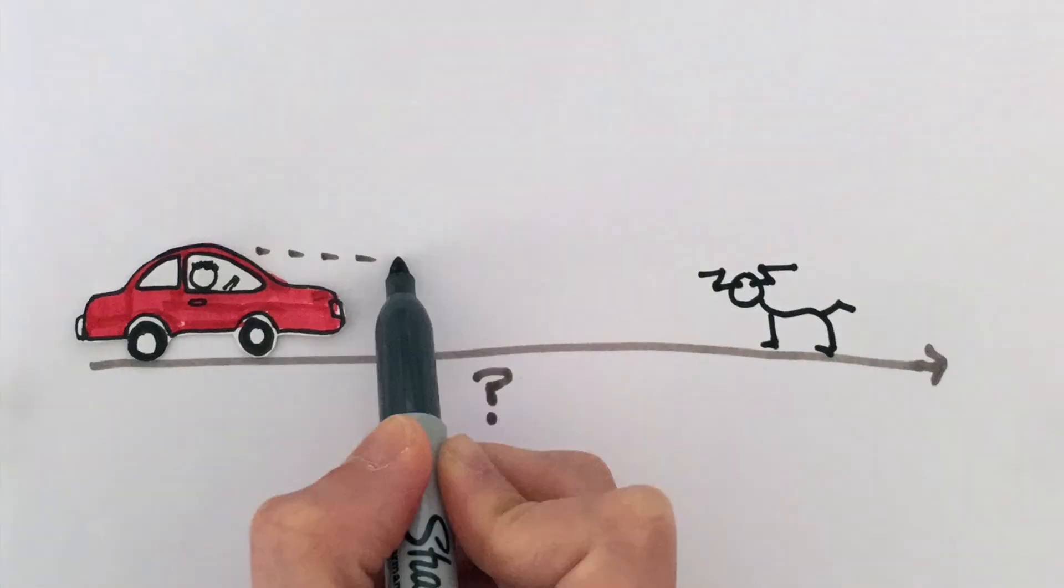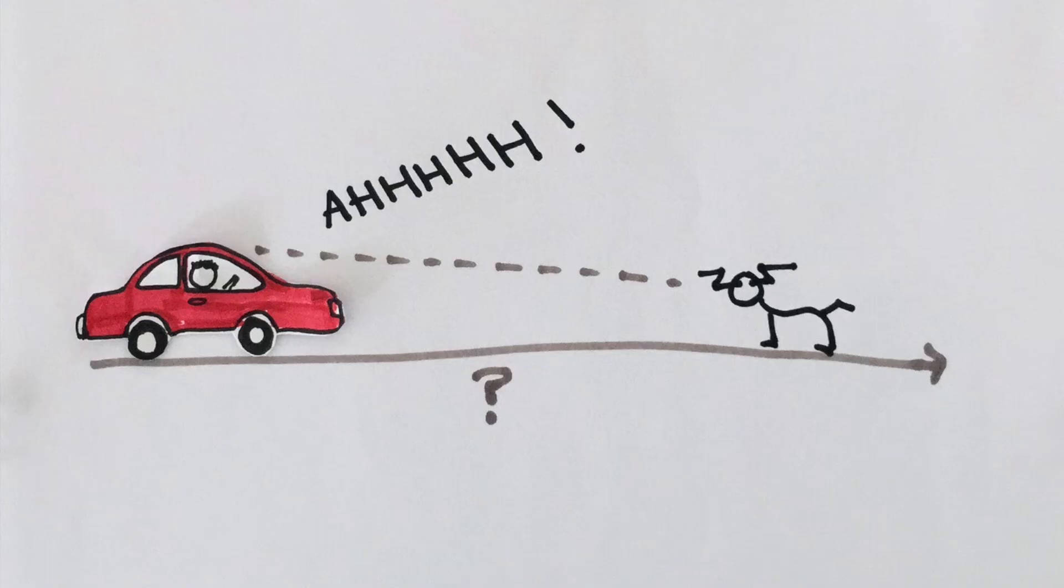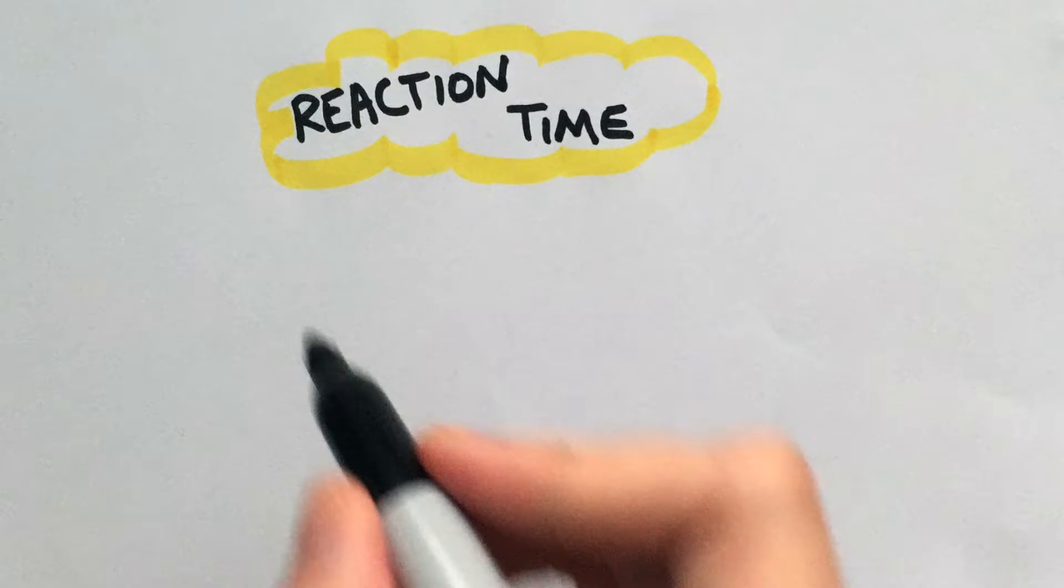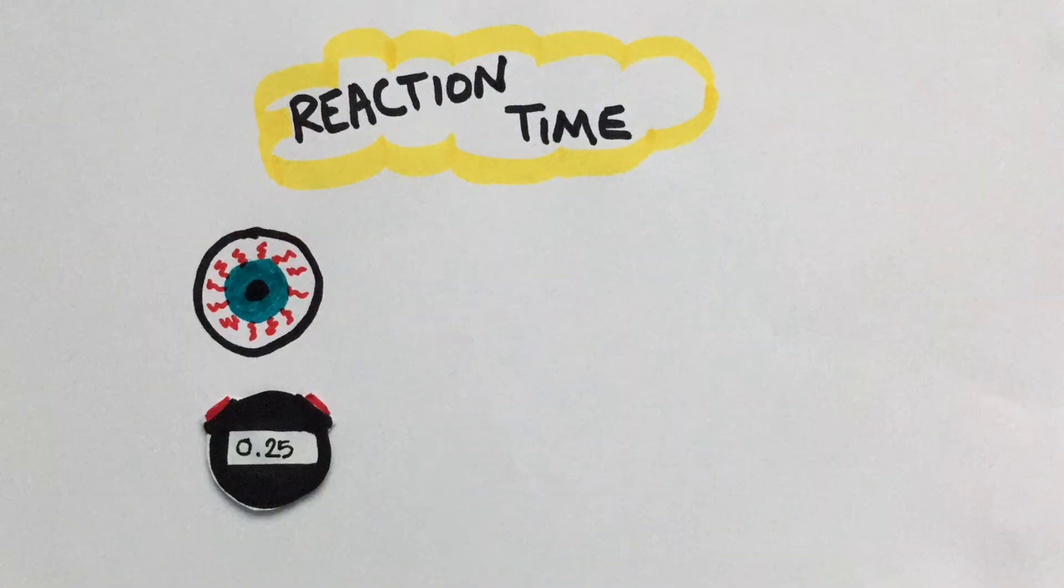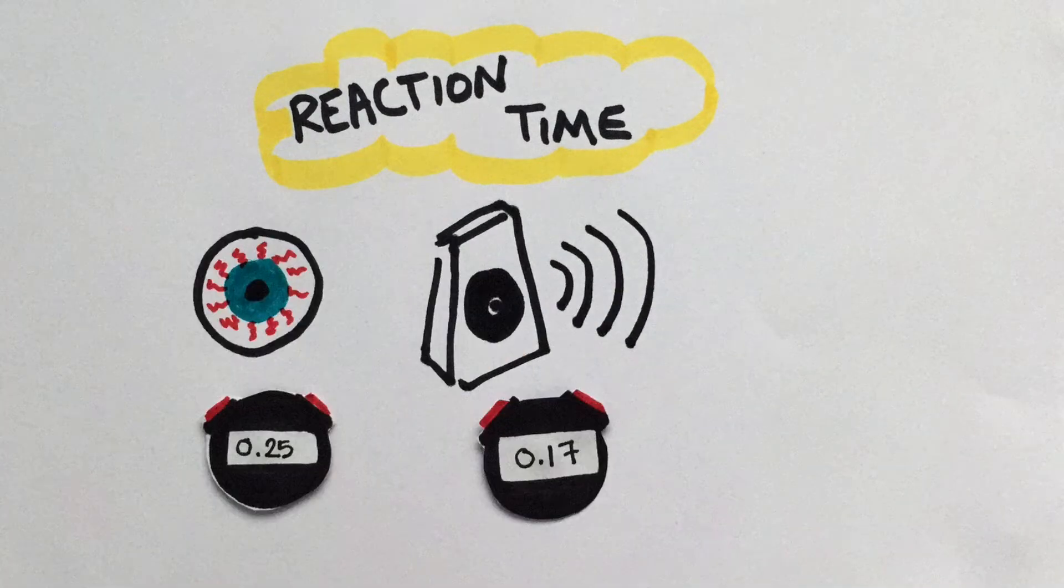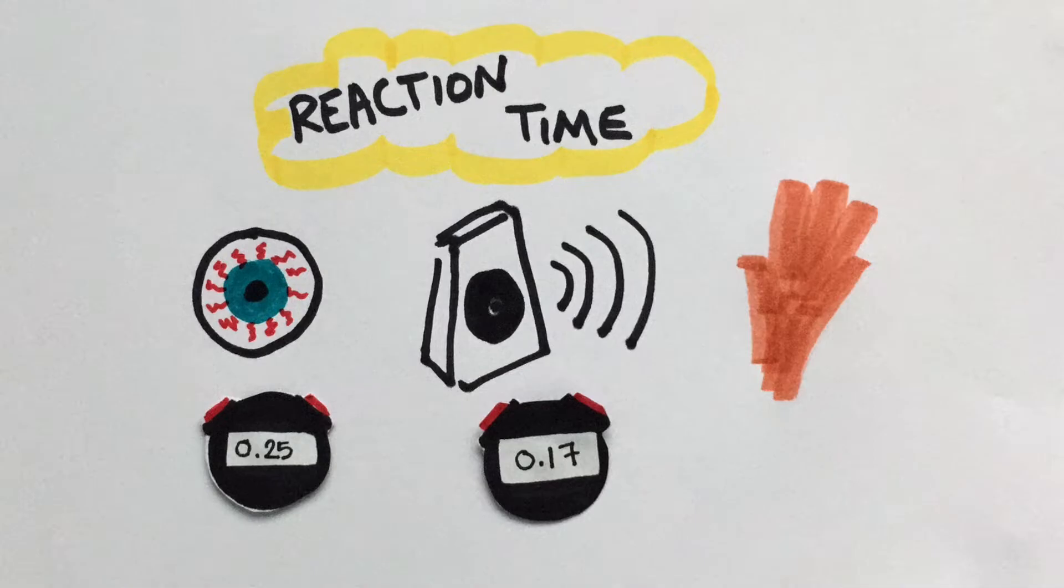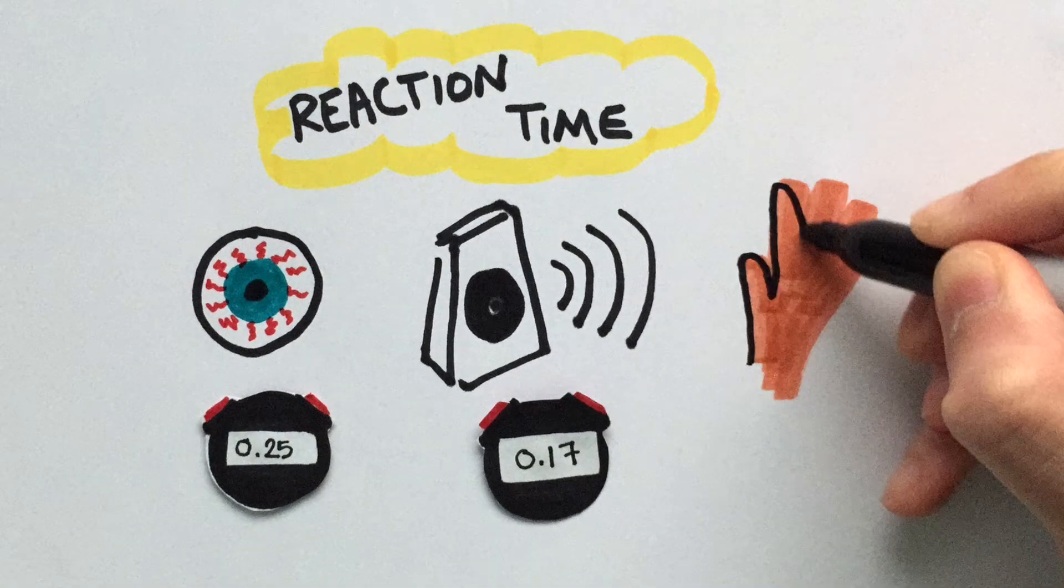First of all, how quickly can the driver respond to the obstacle? The average reaction time for a human being is 0.25 seconds when responding to a visual stimulus, but it's only 0.17 seconds if it's an audio, and even less for a touch stimulus.